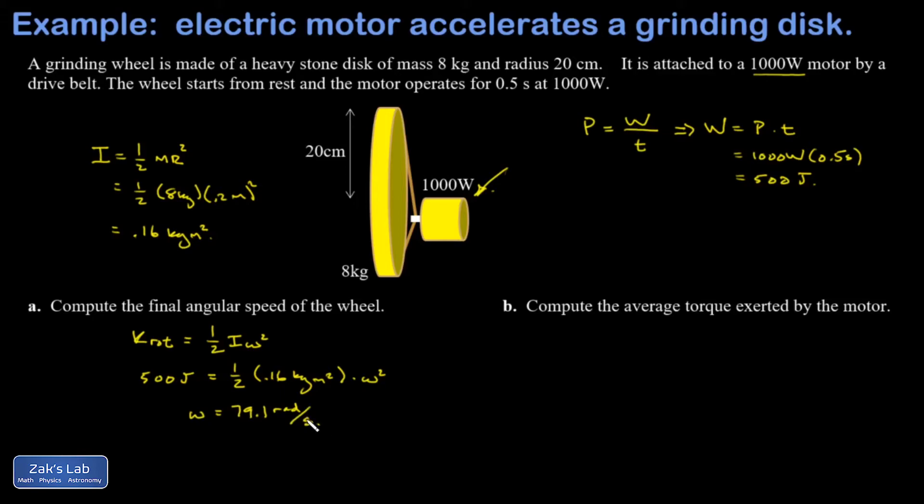In part B, I want the average torque exerted by the motor. So we don't have forces and lever arms, so we're not talking about analyzing it that way. We're talking about inferring the torque based on the known moment of inertia and how fast this thing is accelerating. So that's the missing piece. How do we find out how fast it's accelerating?